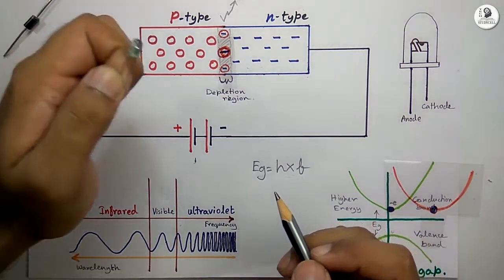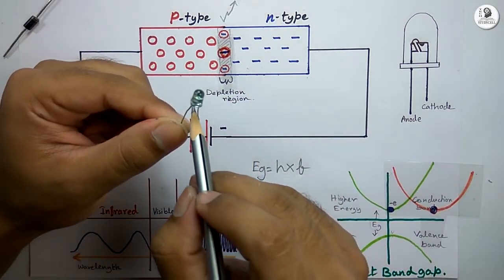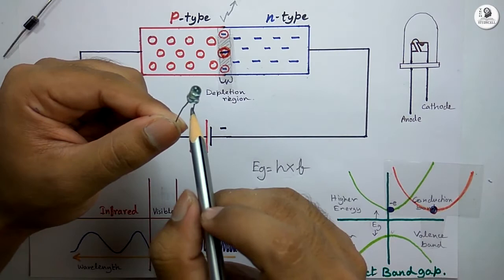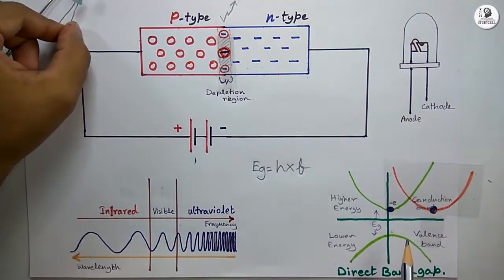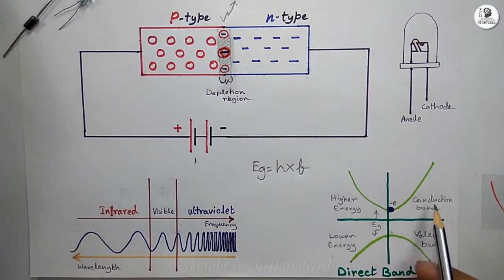For this LED, the semiconductor used is direct bandgap semiconductor like gallium arsenide or gallium phosphide. For the direct bandgap semiconductor, you can see here the minimum of the conduction band and the maximum of the valence band occur at the same point.